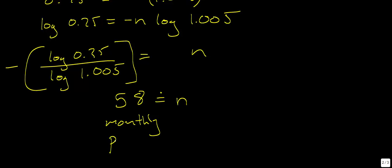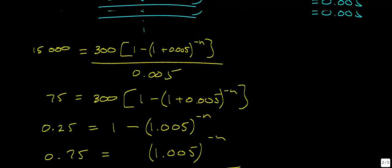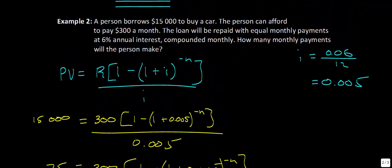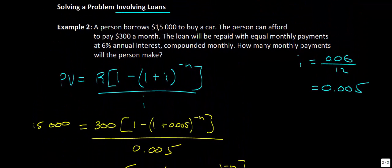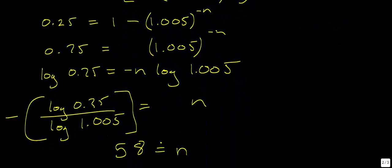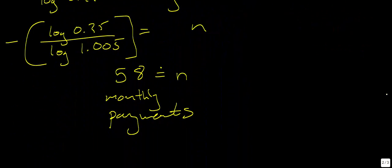So going back to the question: the person is buying a car for $15,000 with a 6% annual interest rate. How long would it take to pay off the car? It would take 58 monthly payments, which is around 5 years.